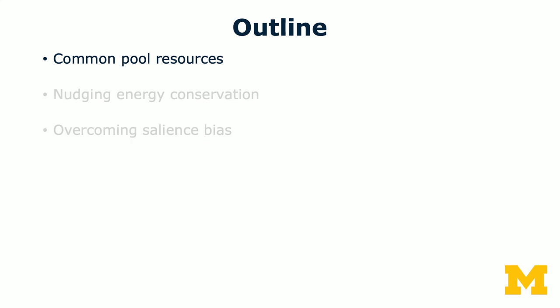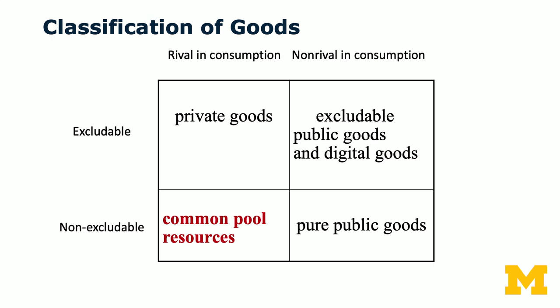So what are common pool resources? In week one, we divided the goods that we consume into roughly four different boxes. The classification was based on two dimensions. One is whether the consumption of the goods is rival — rivalness is defined as whether my consumption precludes other people from consuming the same good. The second dimension is whether the consumption is excludable. If a good is both excludable and rival, then we call them private goods.